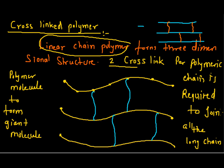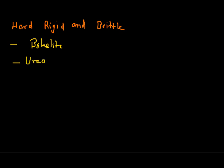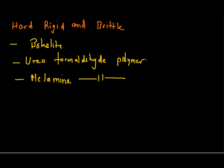Due to the presence of cross-links, these polymers are hard, rigid, and brittle. The examples of cross-linked polymers are bakelite, urea formaldehyde polymer, and melamine formaldehyde polymer. So this is all about the classification of polymer on the basis of their structure.